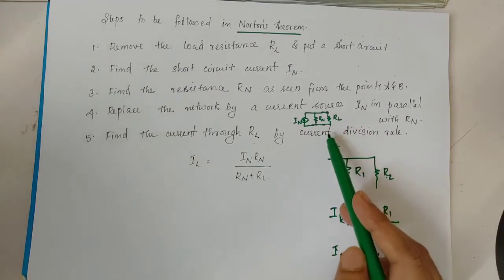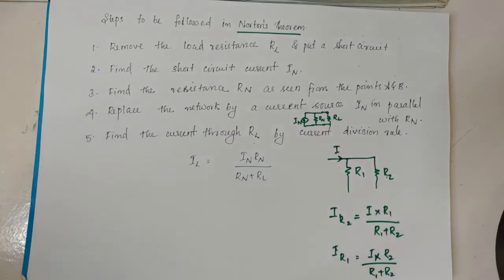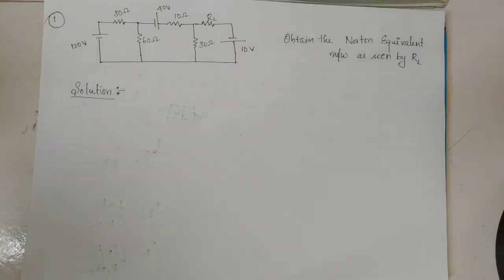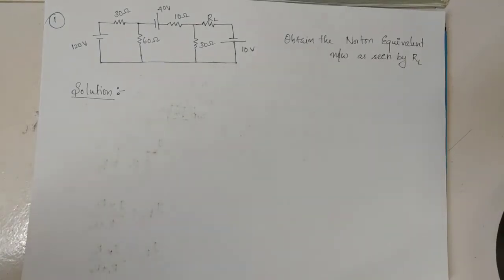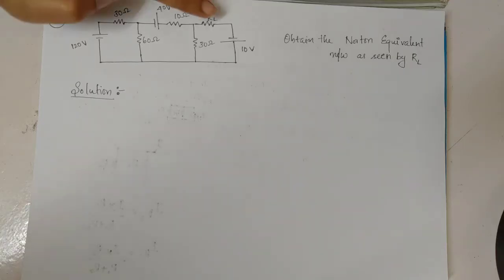The load current is In into Rn divided by Rn plus RL. These are the steps. First question: obtain the Norton equivalent network of the figure as seen from RL.